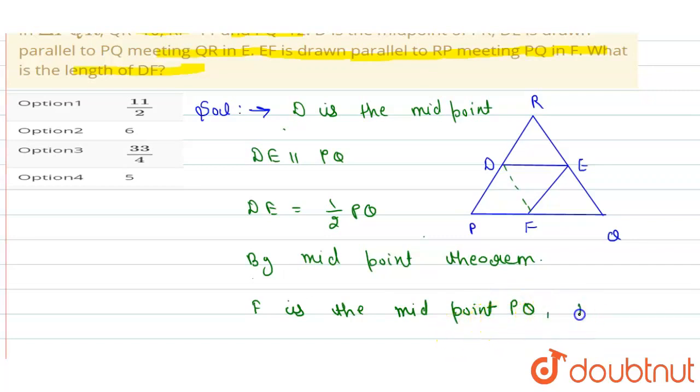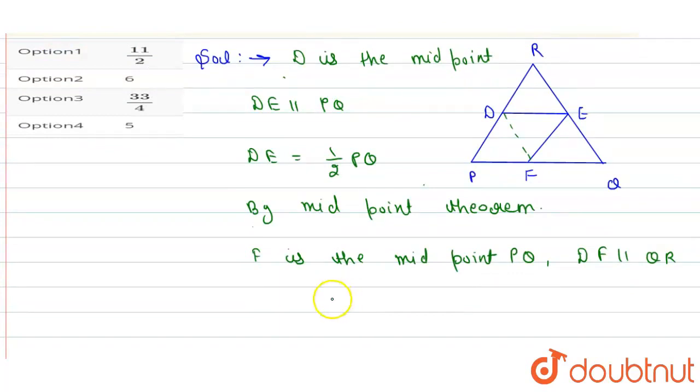DF is parallel to QR. So by the midpoint theorem, DF is equal to 1 by 2 of QR.